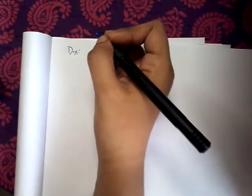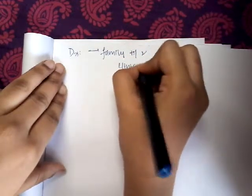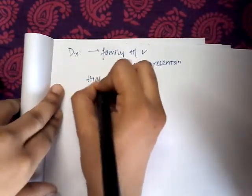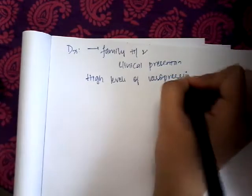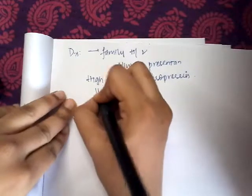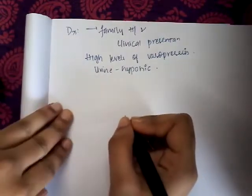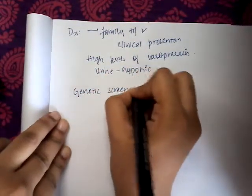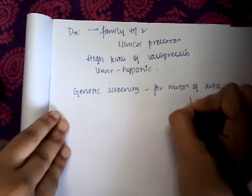How do you diagnose it? The diagnosis of hereditary nephrogenic diabetes insipidus is from family history and clinical presentation. Diagnosis is confirmed by the presence of high levels of vasopressin together with polyuria and hypotonic urine. Genetic screening for mutations of AVPR2 and aquaporin-2 can also be done.